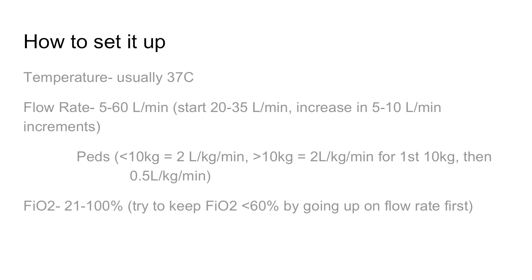In pediatrics, they do it weight-based. If they're less than 10 kilos, it's two liters per kg per minute. This actually came from a podcast featuring the Royal Children's Hospital in Melbourne — they had their PICU high flow protocol. Some sources just said two liters per kg per minute for over 10 kilograms, but this one seemed more reasonable: two liters per kg per minute for the first 10 kg, then half a liter per kilogram after that — kind of like maintenance fluids where you go down once you hit the first threshold. You'll look that up when you use it.